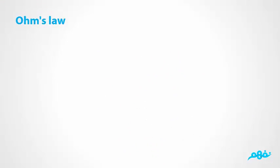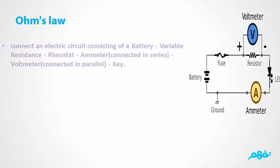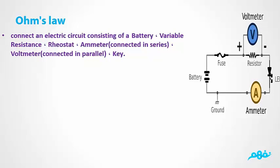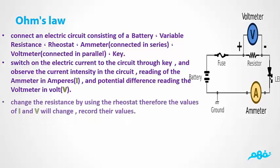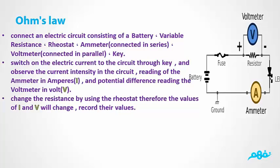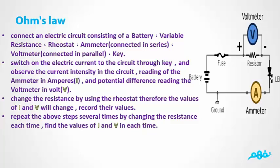Ohm's Law — to discover the relation between current intensity and potential difference. Steps: 1. Connect an electric circuit consisting of a battery, variable resistance (rheostat), ammeter connected in series, voltmeter connected in parallel, and a key. 2. Switch on the electric current through the key and observe the current intensity; record the ammeter reading in amperes. 3. Change the resistance using the rheostat so the values of I and V will change; record their values. 4. Repeat the above steps several times, changing the resistance each time, and find the values of I and V each time.